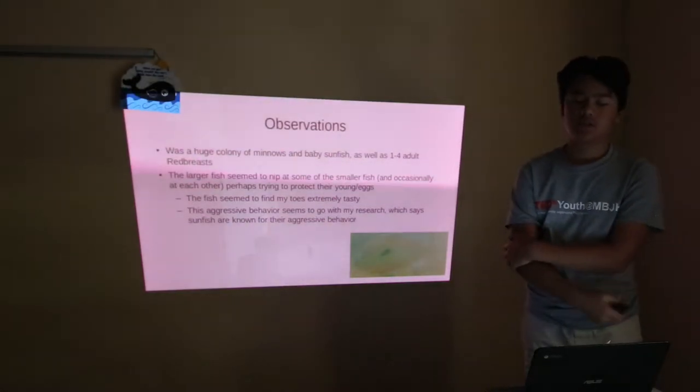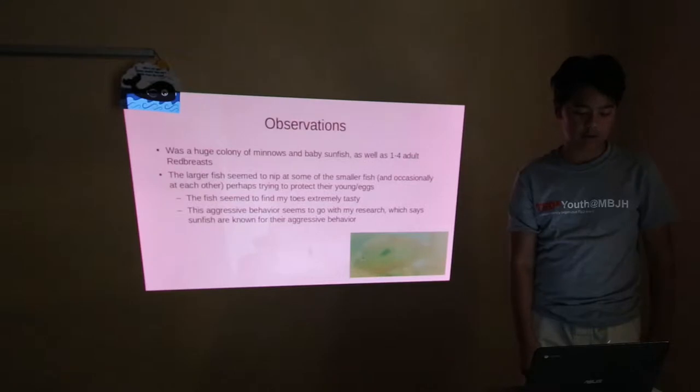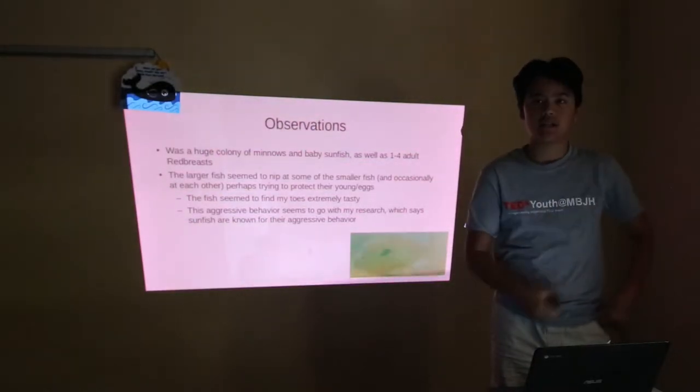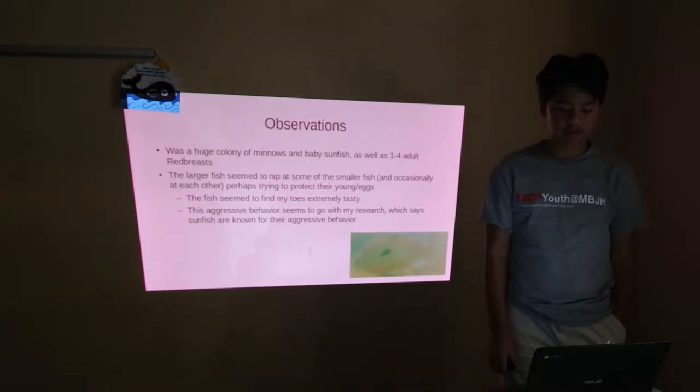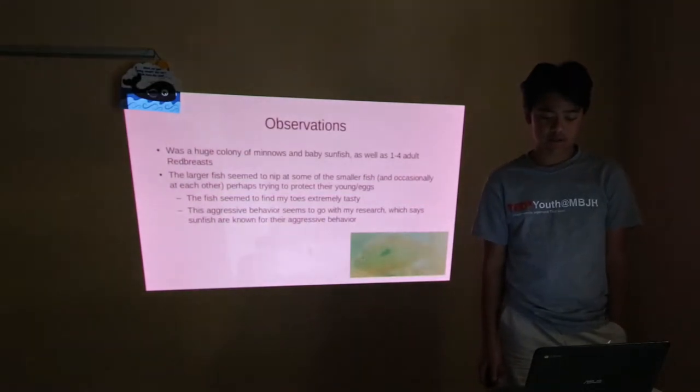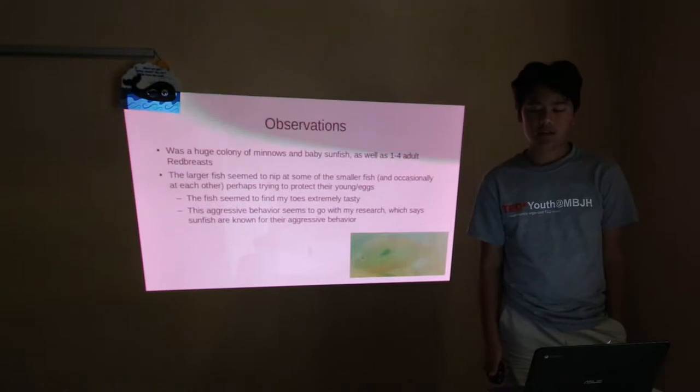So, what did I find? There was a huge colony of minnows and baby sunfish as well as one to four adult red breast sunfish. The larger fish seemed to nip at some of the smaller fish and occasionally at each other, perhaps trying to protect their younger eggs. The fish seemed to find my toes extremely tasty. The aggressive behavior seems to go with my research which says that sunfish are known for being aggressive.